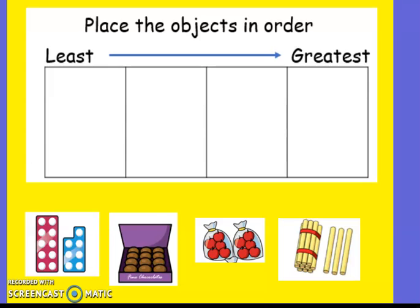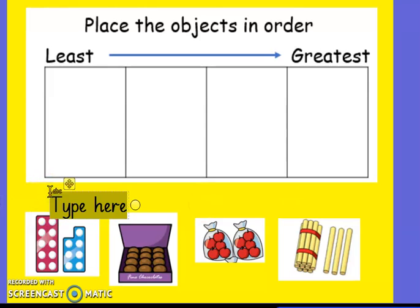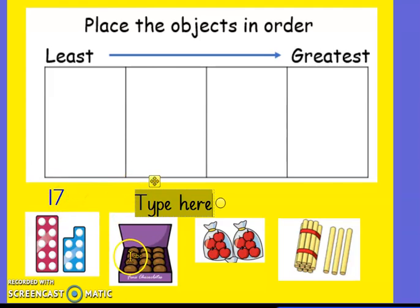So for this one, let's have a go at placing the objects in order. The least objects go here, and then the greatest go there, and then the ones that are in between. So let's see how many we've got. We've got some Numicon here — that's ten. Let's count on: eleven, twelve, thirteen, fourteen, fifteen, sixteen, seventeen. I always find it helps to write down how many you've got, then you don't have to go back and count and think, oh, how many was that again? Especially if it's a big number — you just write it down and that makes it easier to label.